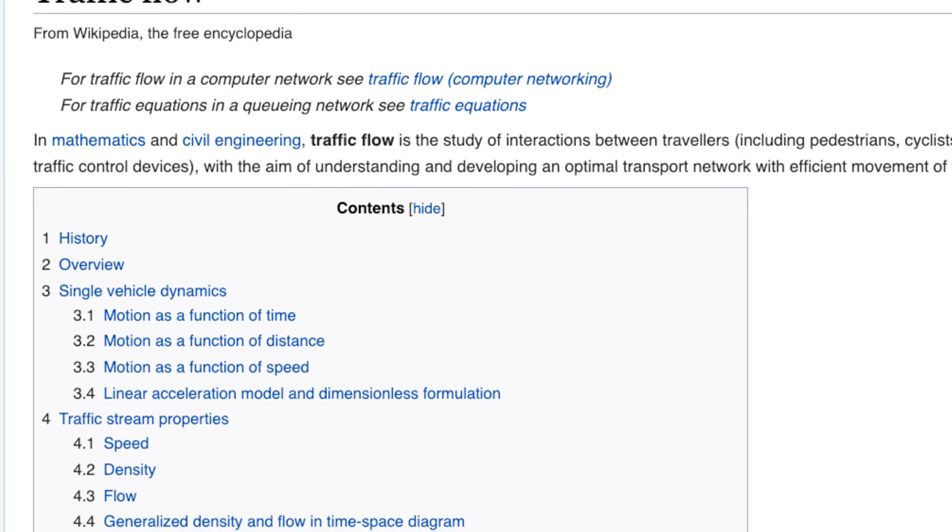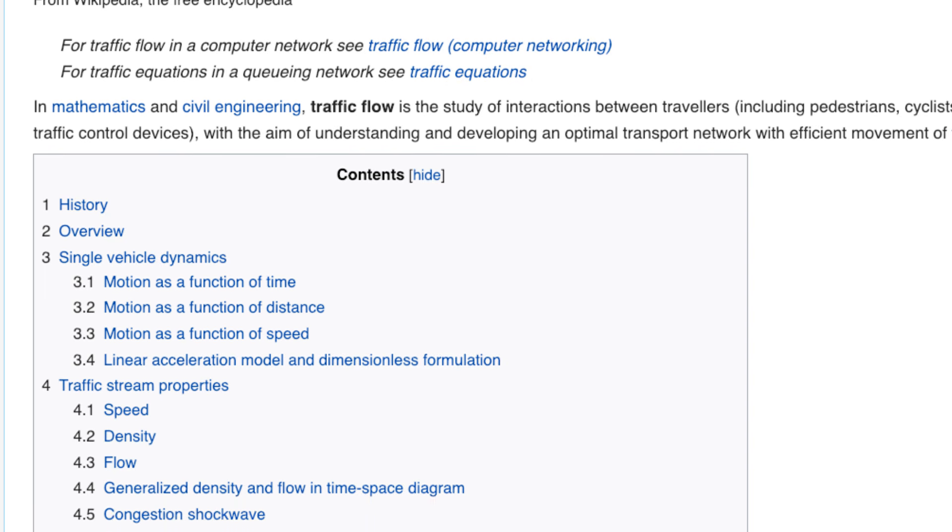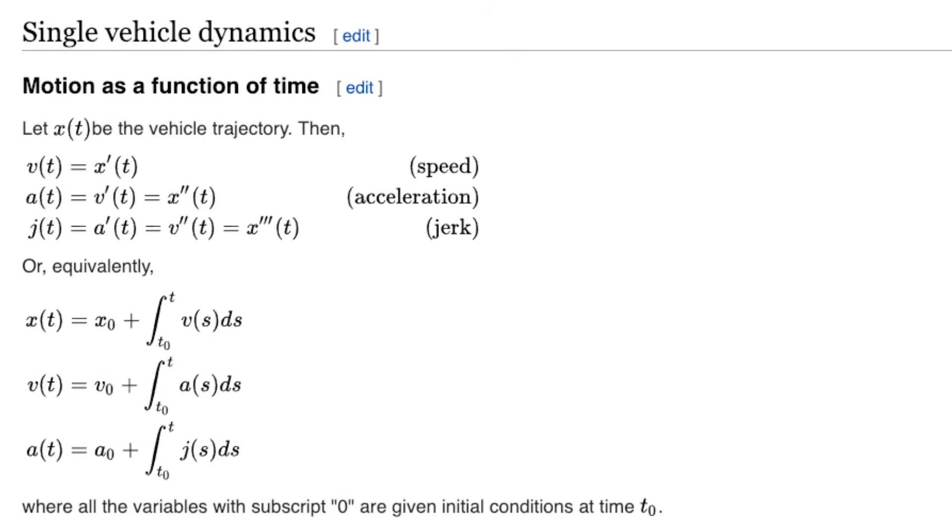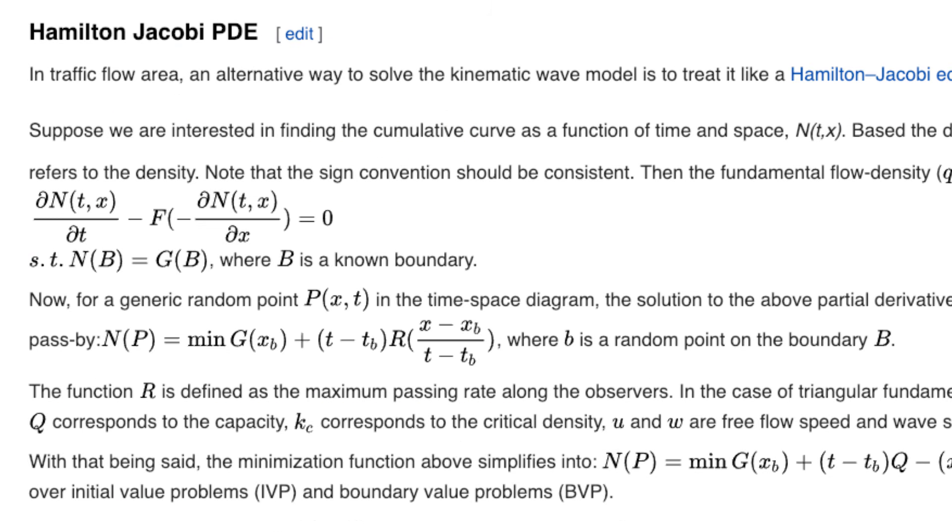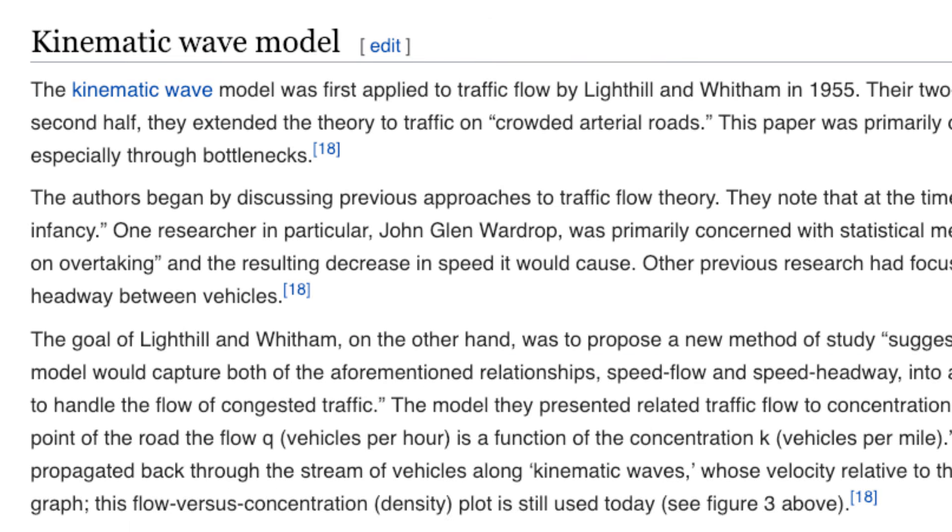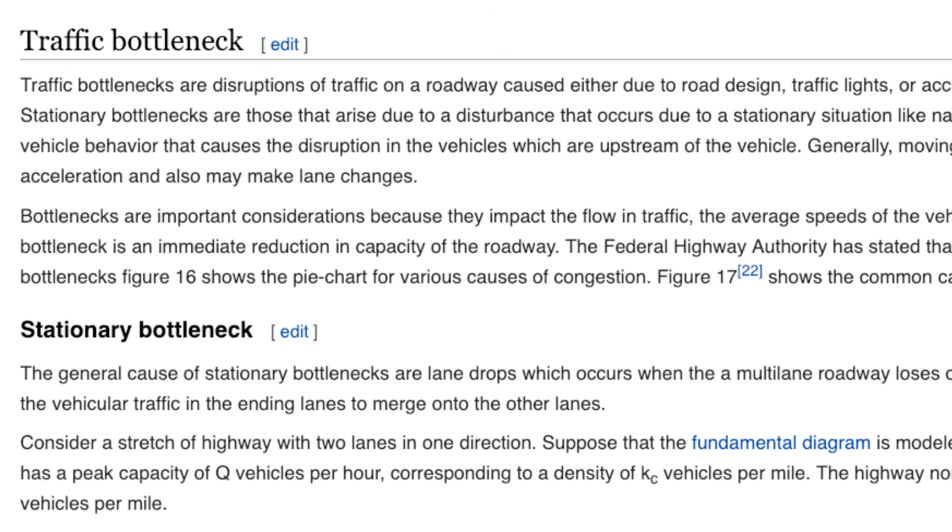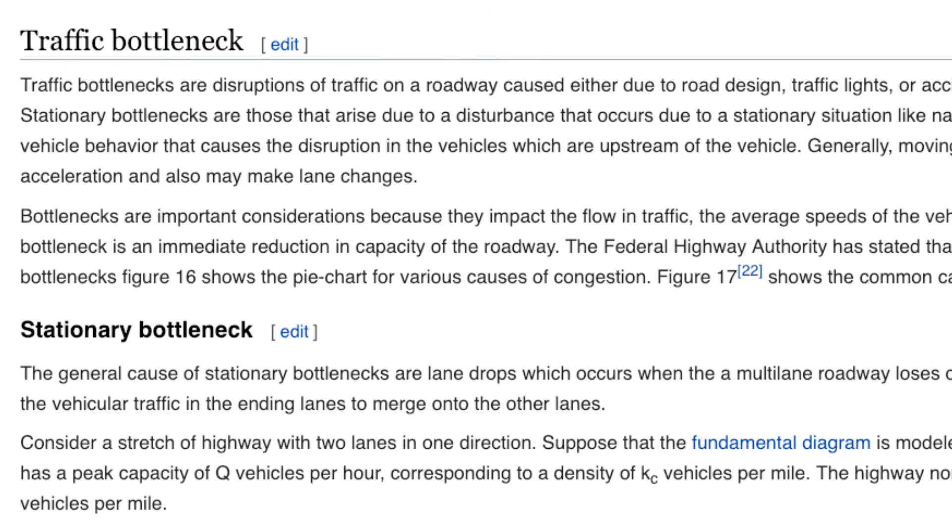But also go look at the Traffic Flow Wikipedia page. It's about as long as World War II's Wikipedia page, and you'll come across things like single vehicle dynamics, methods of analysis, the Hamilton-Jacobi partial differential equation, three-phase traffic theory, kinetic wave model, merge models, traffic bottleneck, and way more. So yeah, not as simple as one may think.